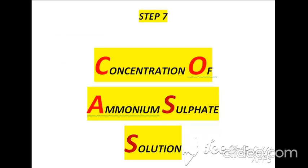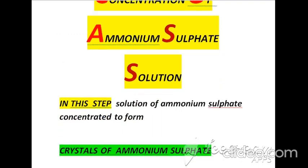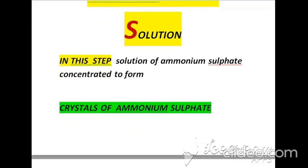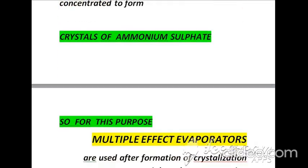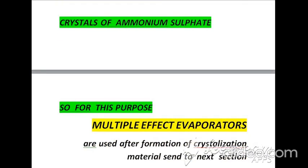According to step seven, which is concentration of ammonium sulphate solution, the solution is concentrated to form crystals of ammonium sulphate. For this purpose multiple effect evaporators are used, and after formation of crystals the material is sent to the next section.